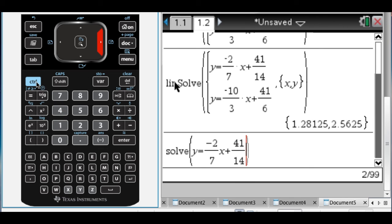Now I'm going to press space, which is right here, down here. Boom. Space. And type and. And another space. And then the other one. Y equals negative 10 thirds x plus 41 over 6.